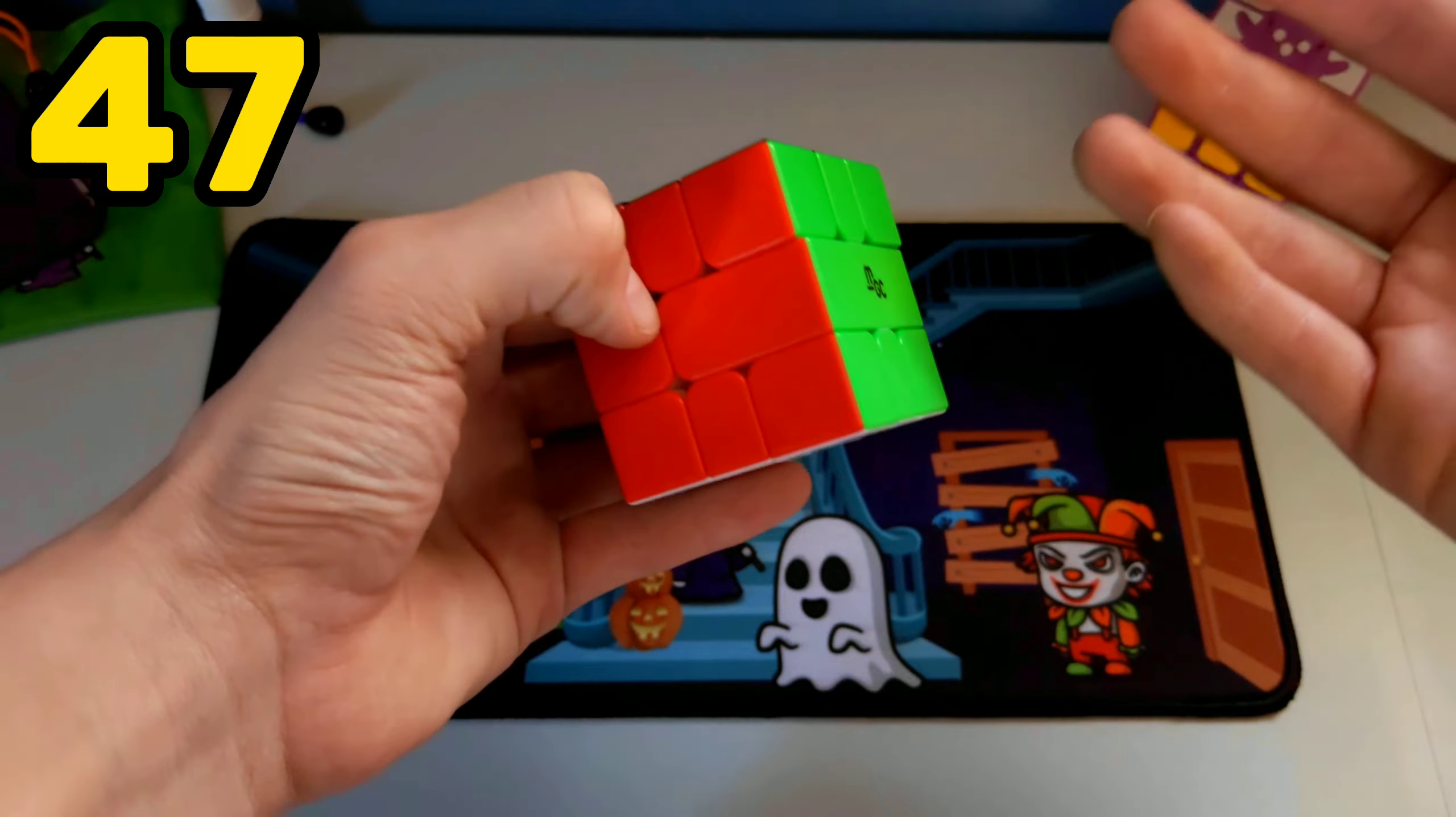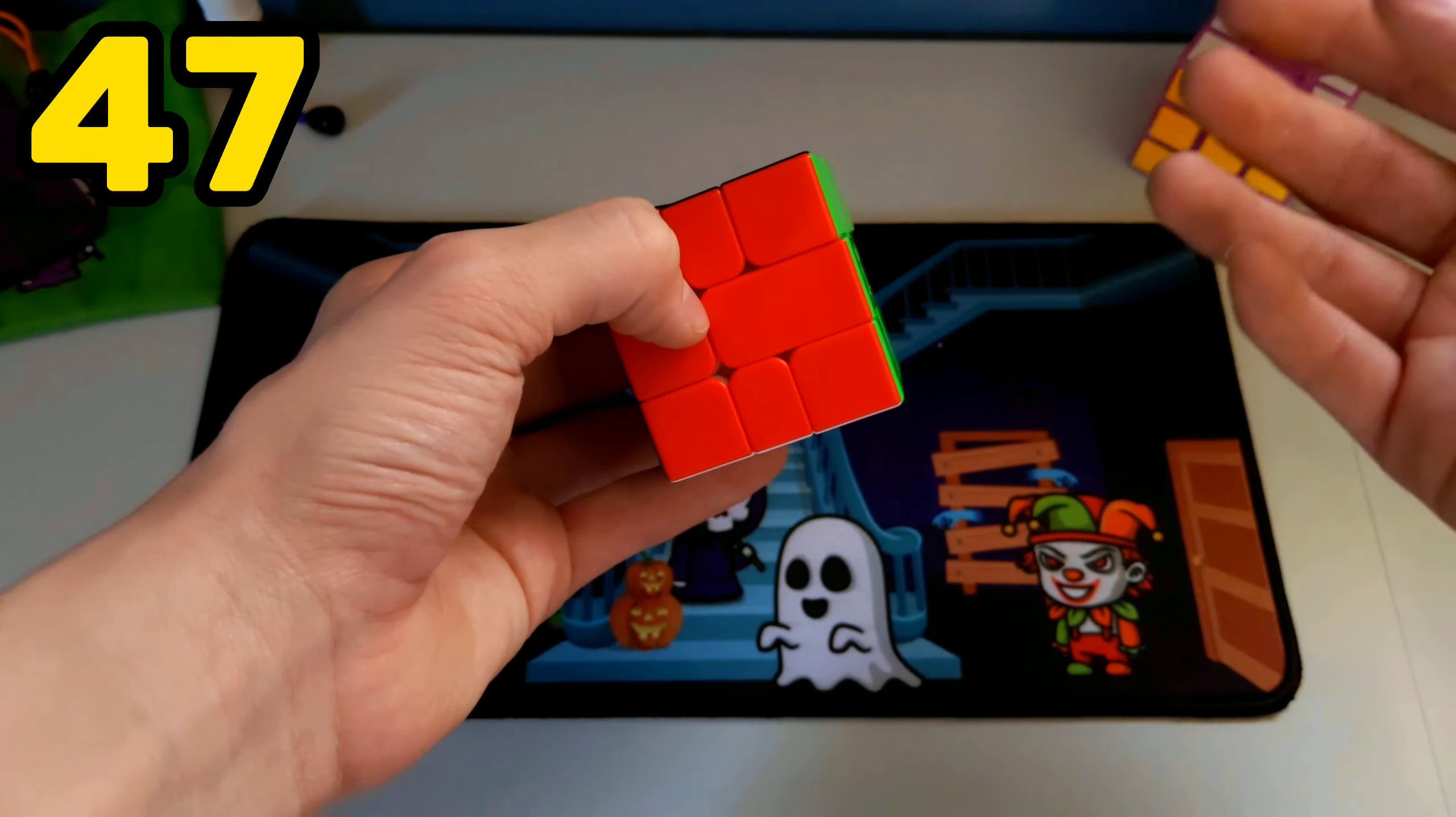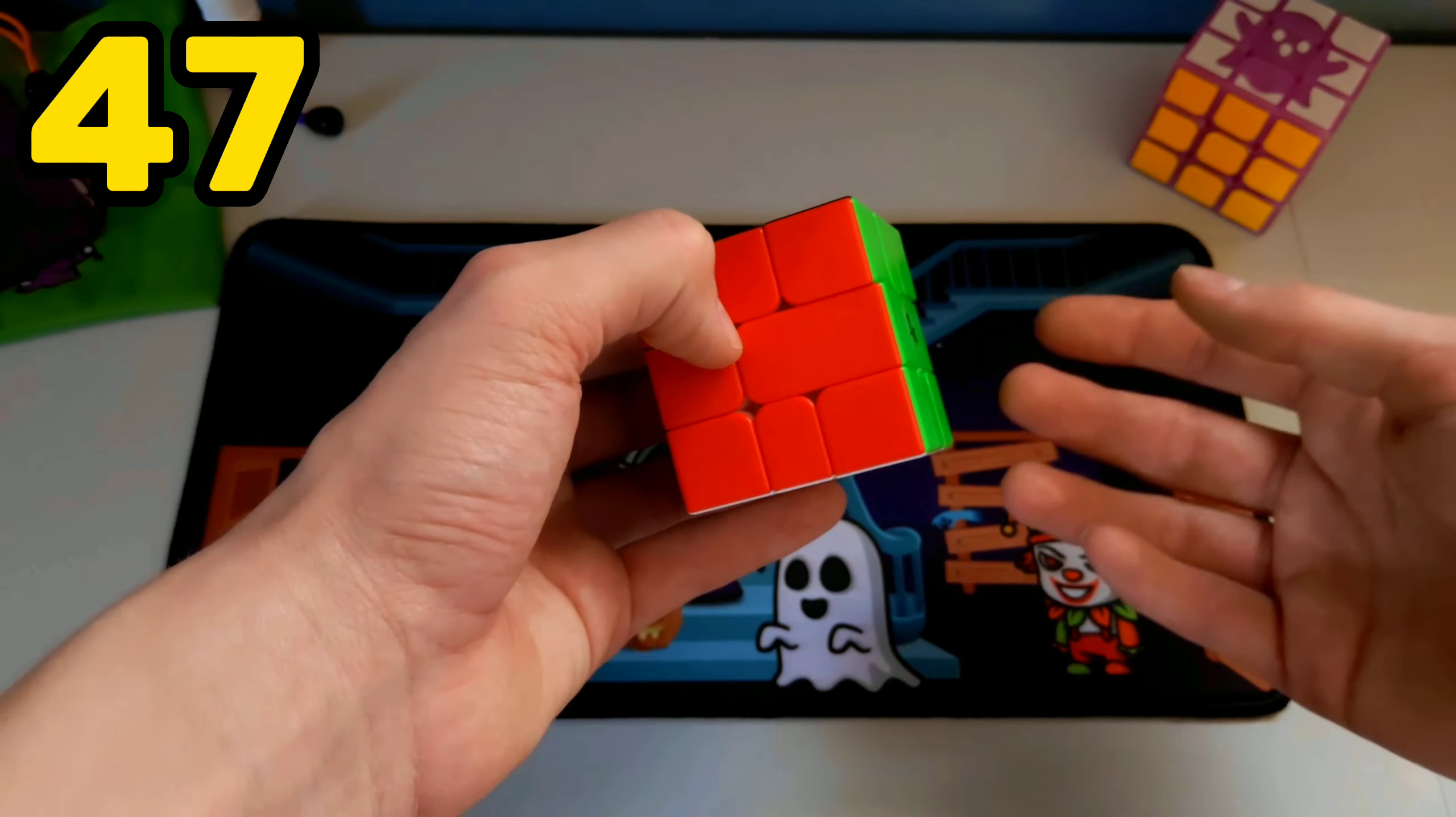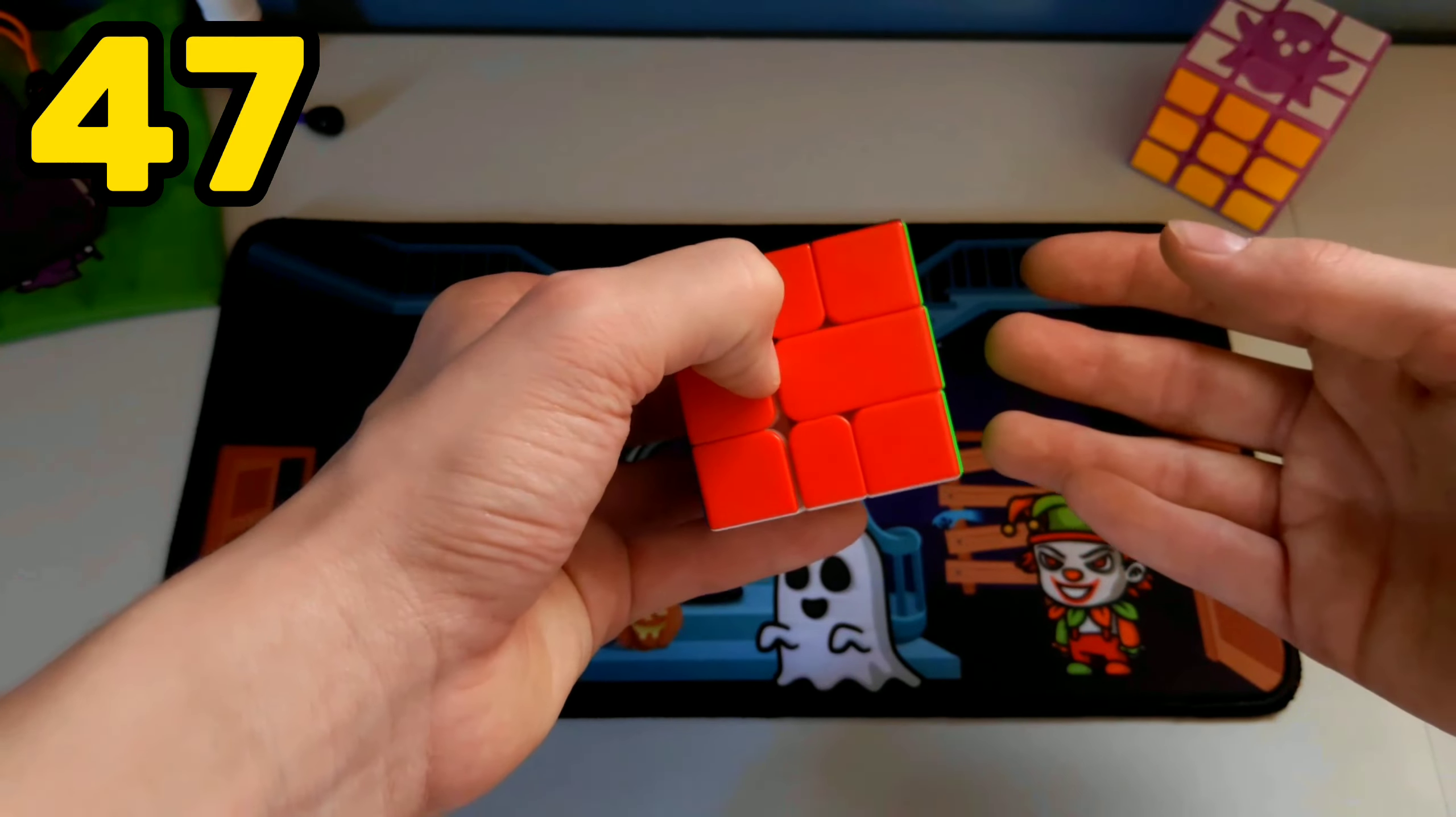The square one has some really wacky notation, and your first time solving it is almost like relearning the Rubik's Cube all over again. But there is something way harder than this. Just wait till the end because it is absolutely crazy.